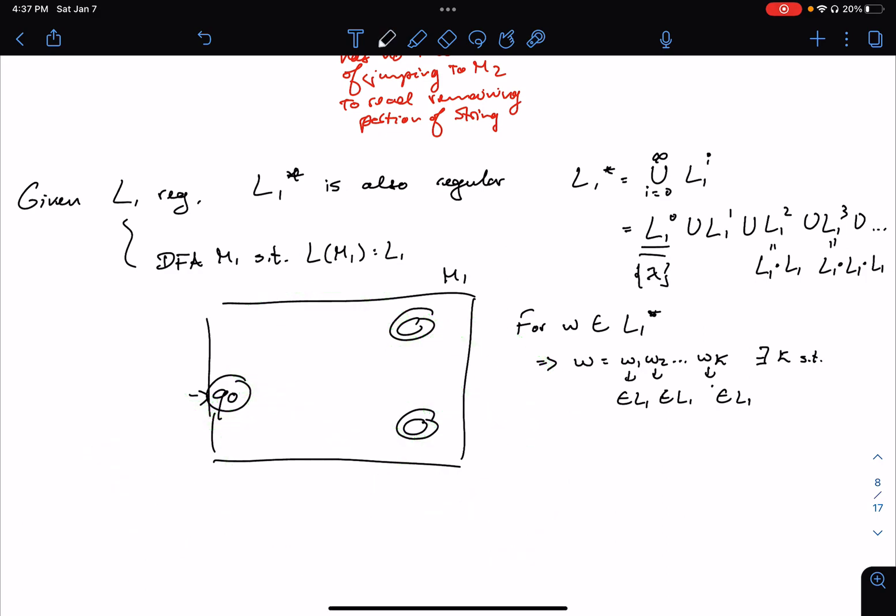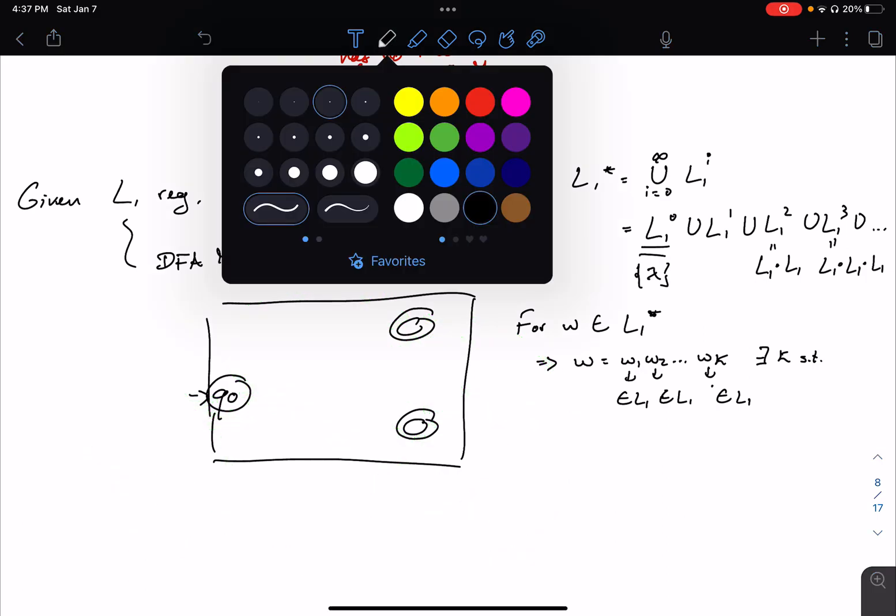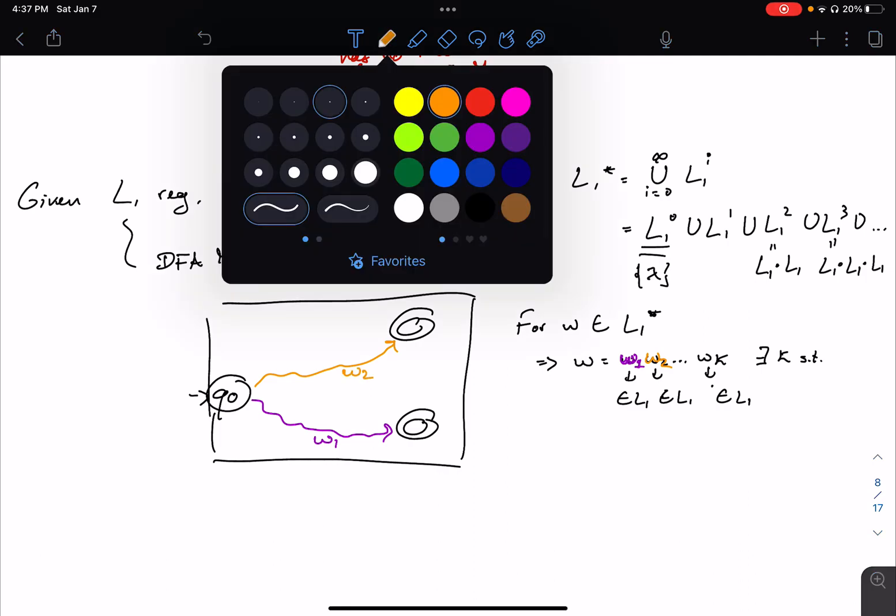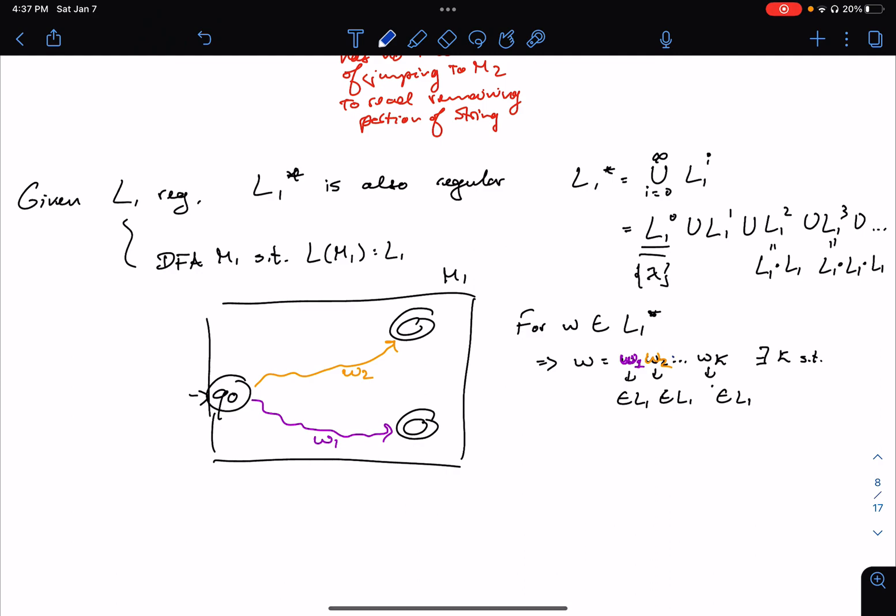So you'll notice what happens, so let's use some color. Let's say that this is W1, so W is equal to W1, W2, and so on, WK. That means that the first W1 starts from Q0, maybe goes to this final state, then maybe W2 is in orange, W2 starts at Q0, goes to this final state, then maybe W3 is in blue, W3 does this weird path, and then ends up in this final state, and so on.